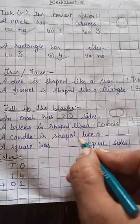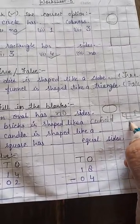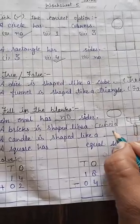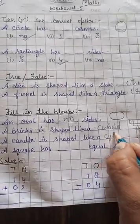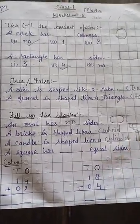The brick is shaped like a cuboid. A candle. Candle is shaped like a... Yes, the shape of candle. This one. The shape is cylinder. C-Y-L-I-N-D-E-R. Cylinder.